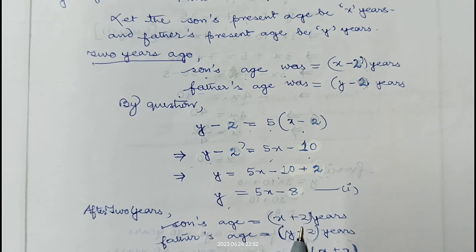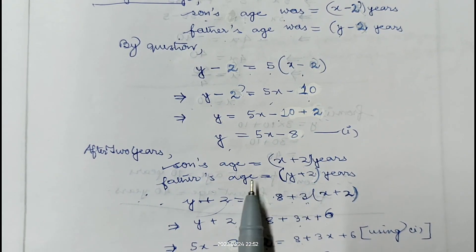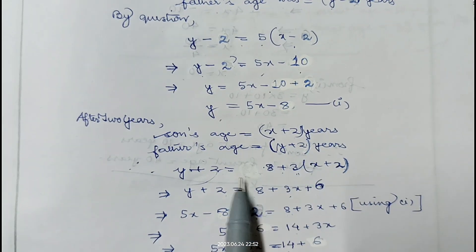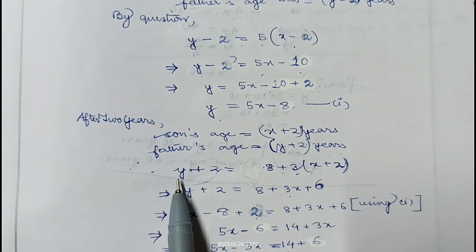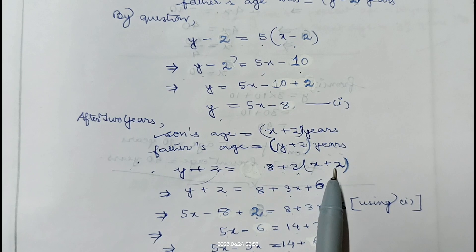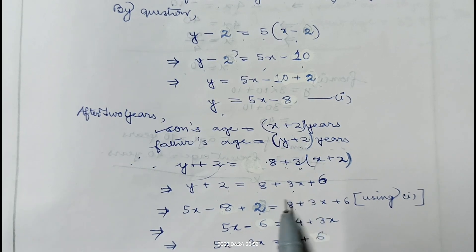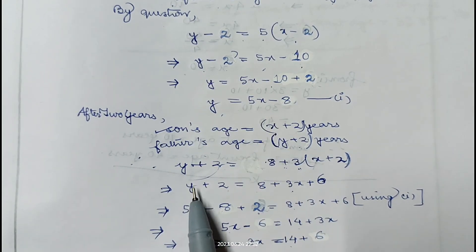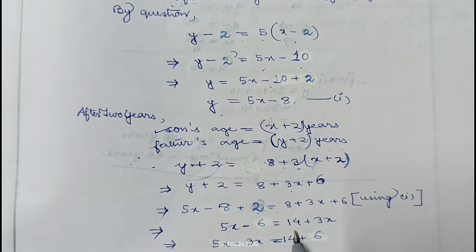Again, 2 years later son's age will be x plus 2 and father's age will be y plus 2. Father's age will be 8 more than 3 times the age of his son, so y plus 2 equals 8 plus 3 times x plus 2, giving y plus 2 equals 8 plus 3x plus 6. Now y equals 5x minus 8, so substituting: 5x minus 8 plus 2 equals 8 plus 3x plus 6, which gives 5x minus 6 equals 14 plus 3x.